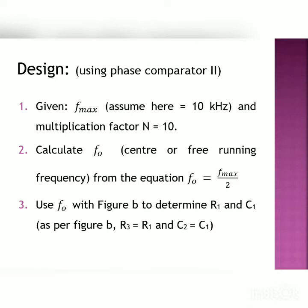Third stage, use FO with figure B to determine R1 and C1. Now, as per the figure B, R3 is equal to R1 and C2 is equal to C1. Now, R1 and C1 are the VCO resistor and timing capacitor as per the internal block diagram.